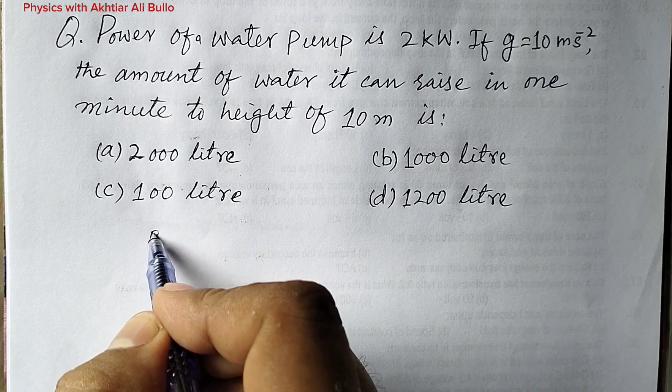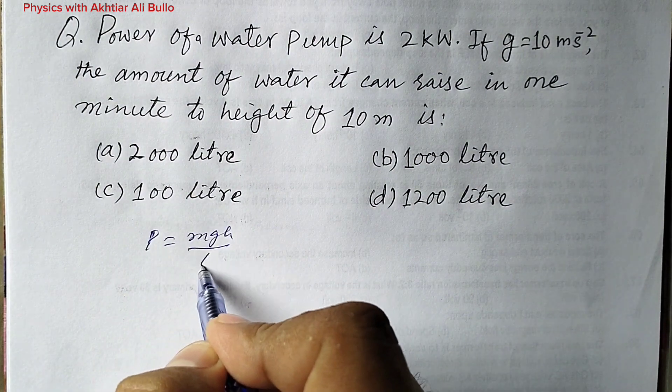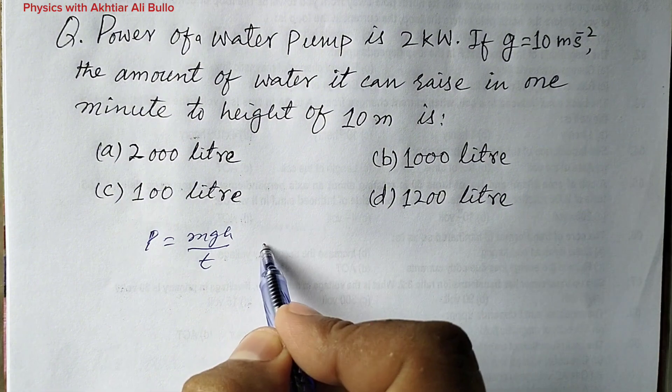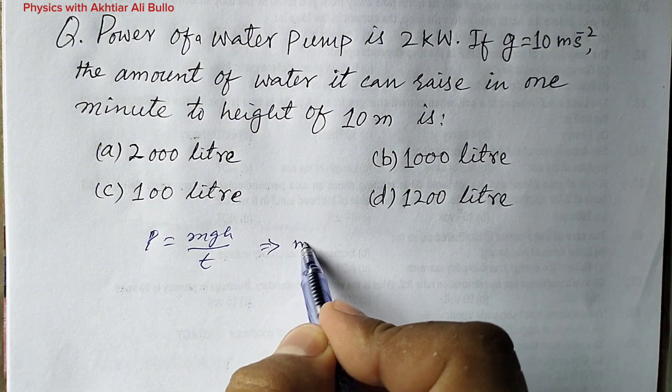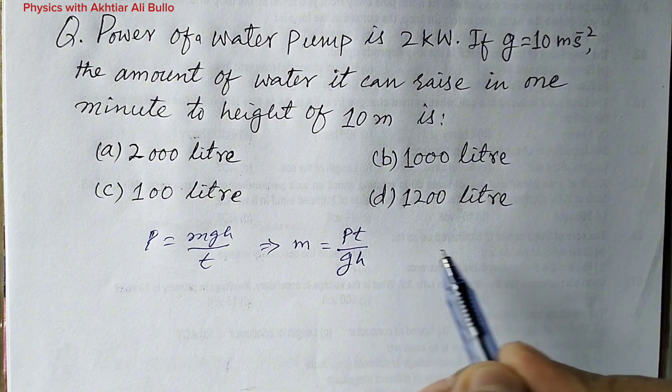Power is equal to mgh upon t. This formula will become m is equal to P into t upon g into h.